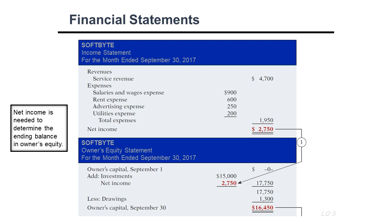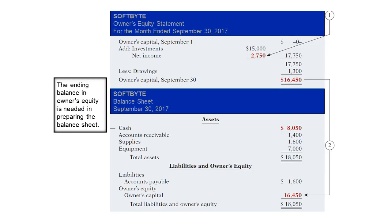In the balance sheet, we state all the assets we have, and we state all the liabilities and owner's equity. In the owner's equity section, we put the new owner's capital found in the owner's equity statement — $16,450. Our total assets must equal total liabilities and owner's equity. If the two sides don't match, there is a problem with the balance sheet. End of Chapter 1.